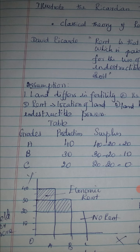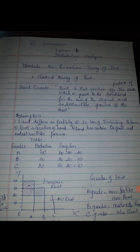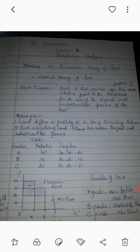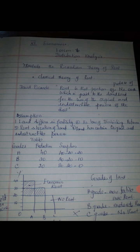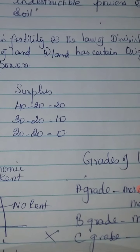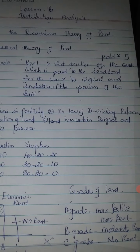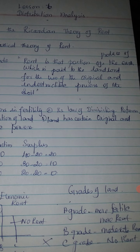Now let's take a diagram. The X-axis shows the grade of land, whereas the Y-axis shows the fertility power. A-grade land has 40 units of fertility and the economic rent is shown for A-grade. B-grade has 30 units, and C-grade also has its fertility shown. The A-grade, B-grade, and C-grade fertility differences are illustrated.